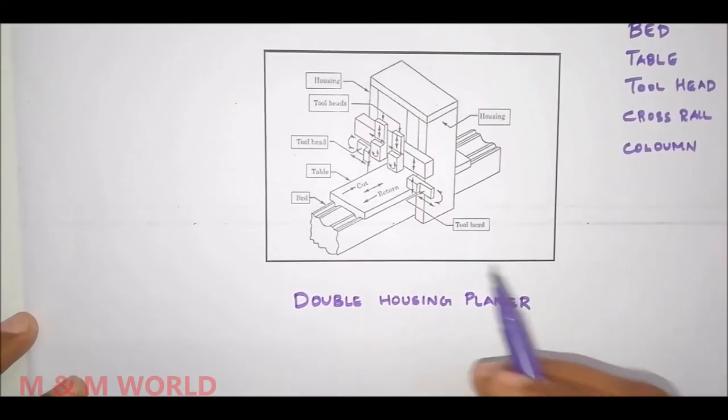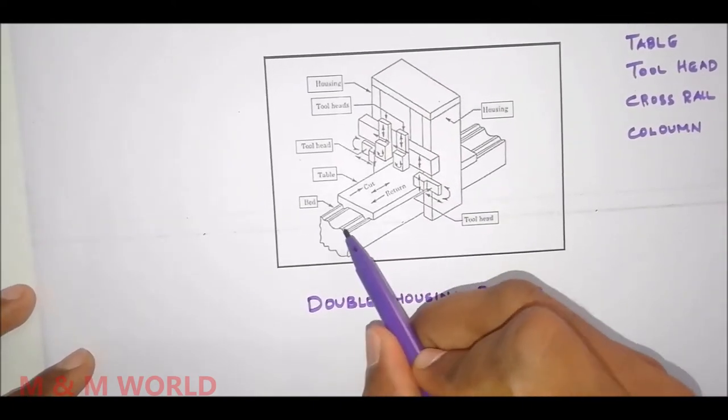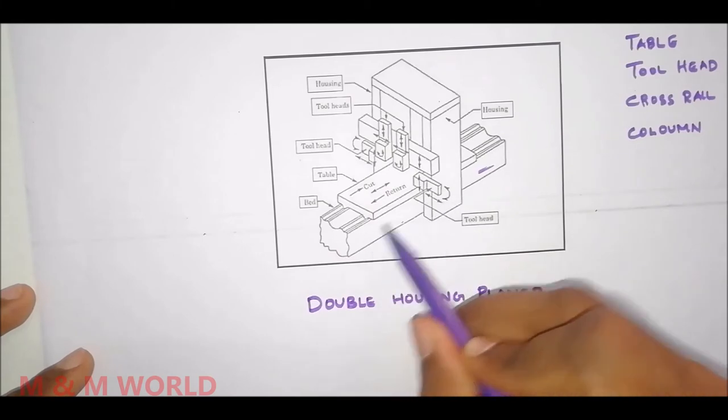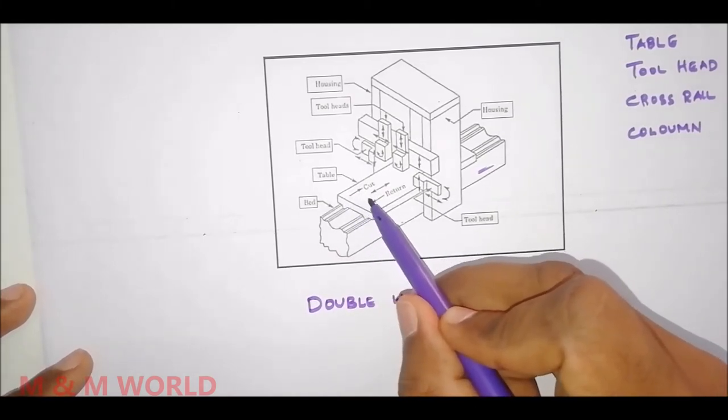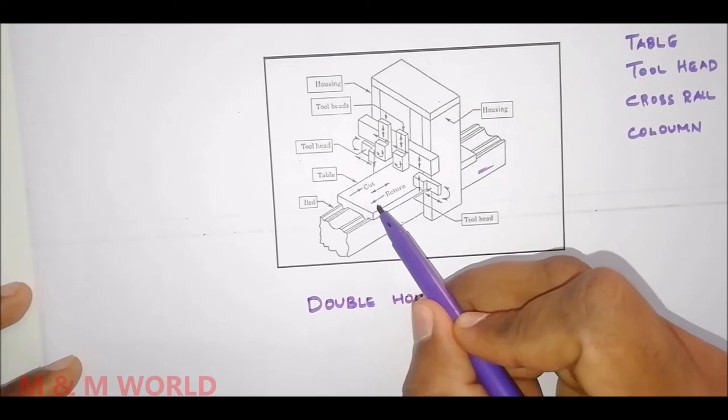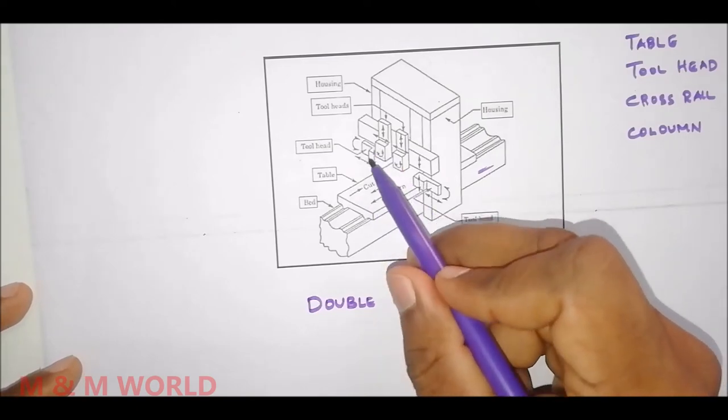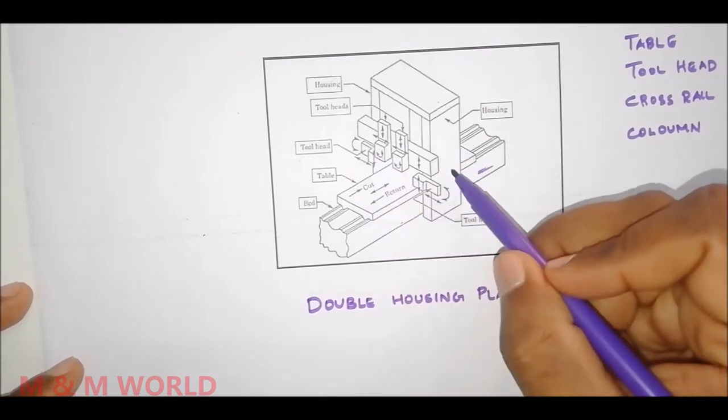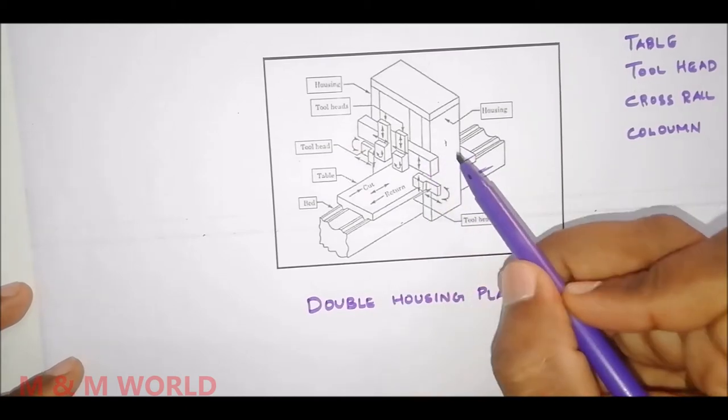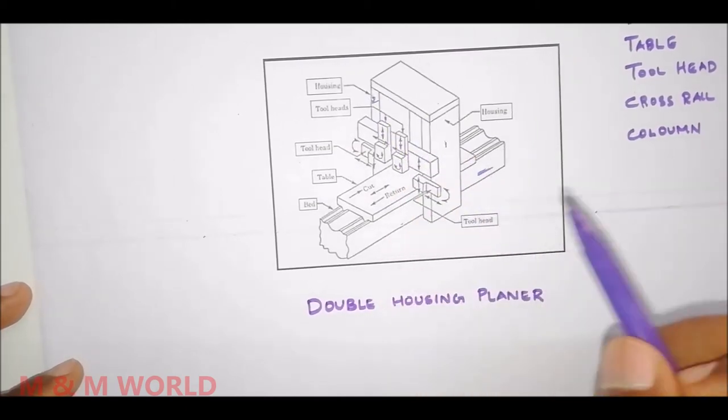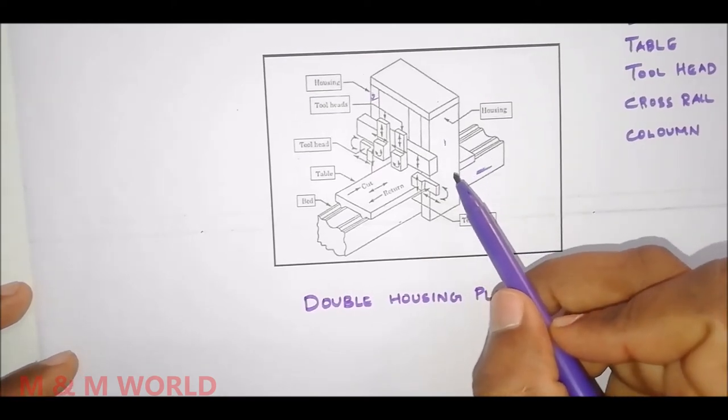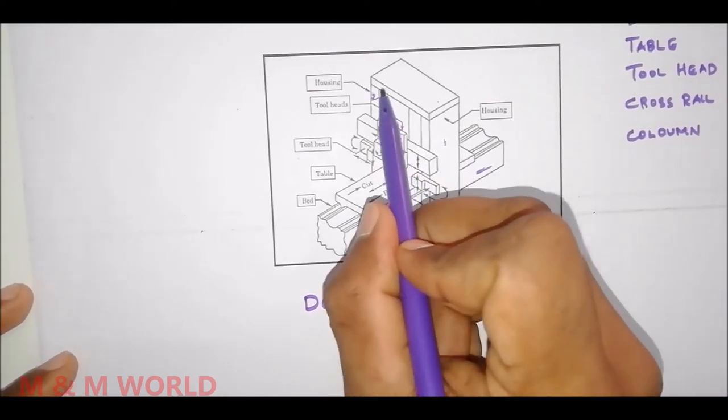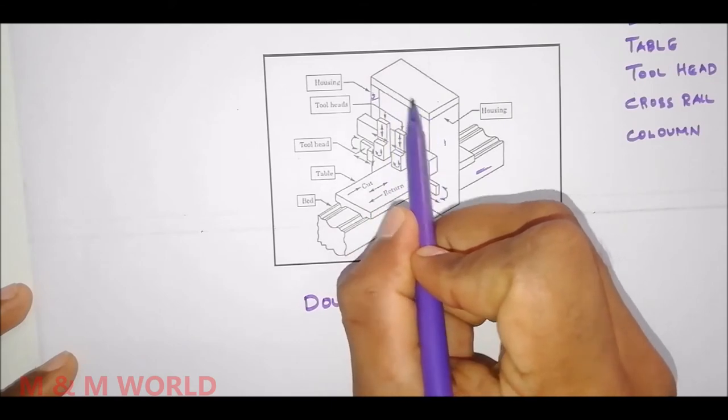Here we can see the bed, and on top of the bed we have a table. On the sides of the bed we have two columns or housings - this is the first column and this is the second column. Two housings or columns or uprights, and the top of the column is being supported by a cast iron member for rigidity.